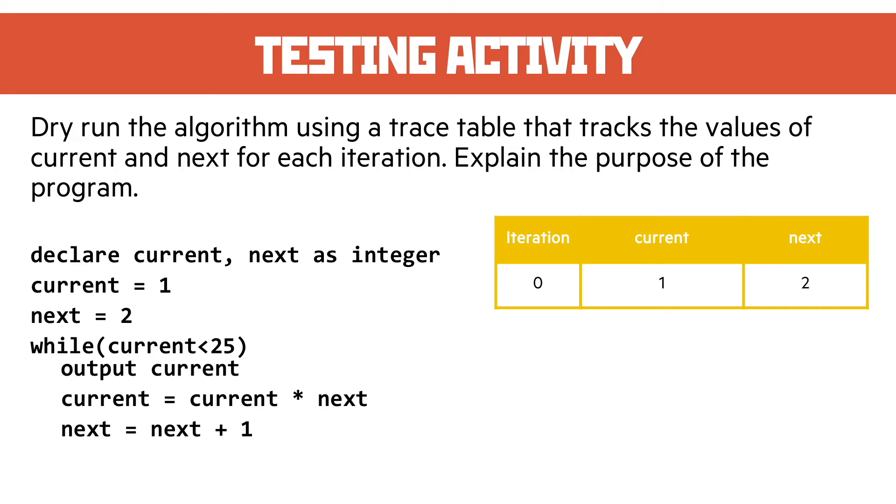Our first iteration, iteration zero before it starts, has current and next values of one and two. That's before the while loop starts. Then our first iteration gives us current is two and next is three. Then we end up with current to six and next is four, then we end up with current being 24, so a big jump there, and next is five.